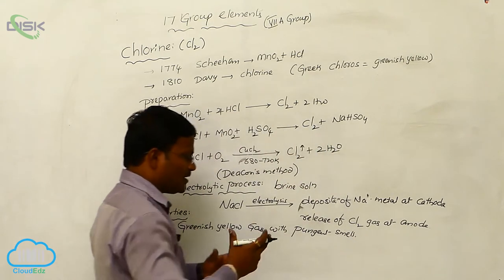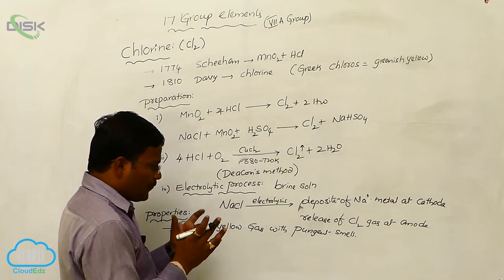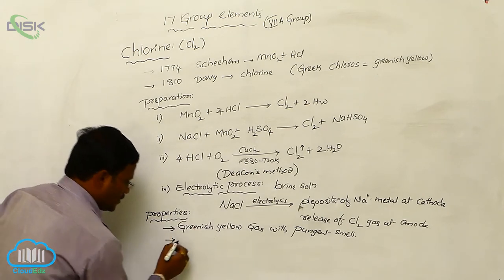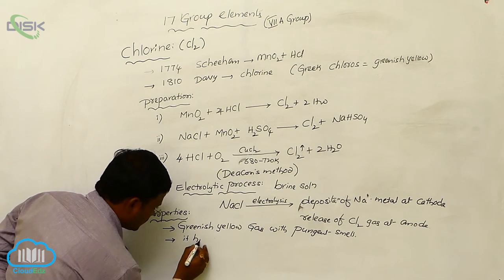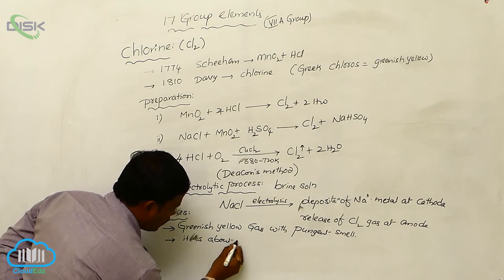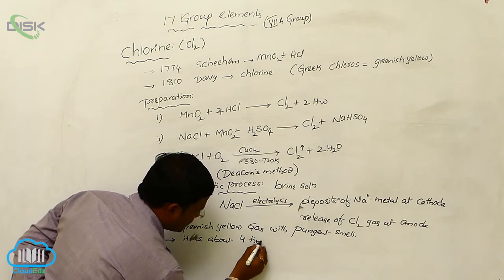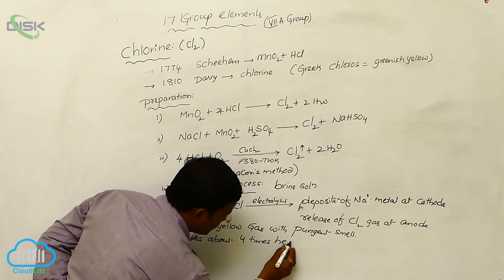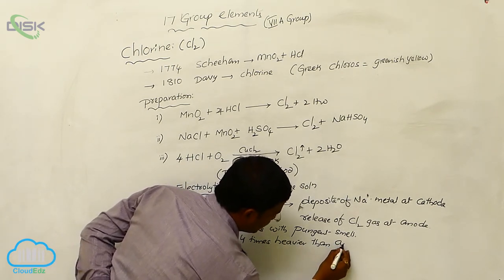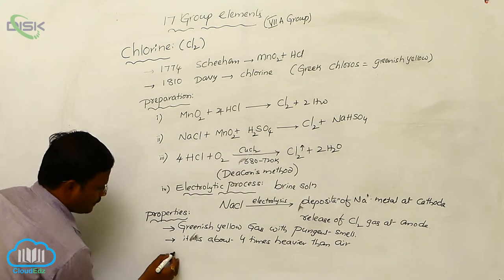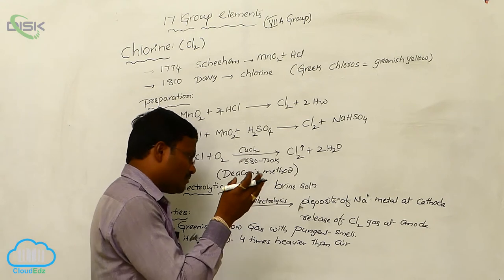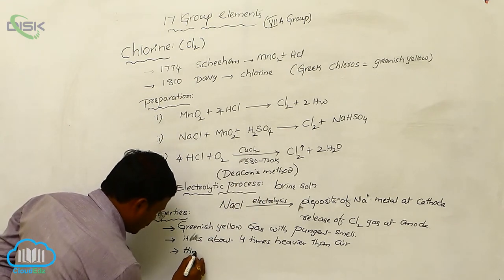And it produces fumes. Different types of fumes resulting from chlorine. It is about 4 times heavier than air. The weight of chlorine is about 4 times heavier than air.